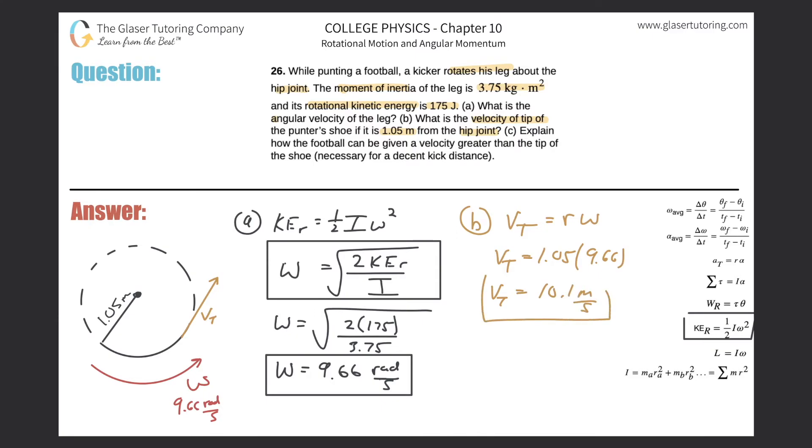For letter C, it asks: explain how the football can be given a velocity greater than the tip of the shoe necessary for a decent kick distance. We have to make some assumption here. The assumption is that the mass of the football is less than the mass of the leg. I think that's probably pretty safe.